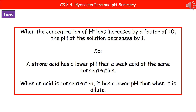If we think about concentration: when an acid is concentrated, the pH is lower than when it's dilute. So a one molar acid has a lower pH than a 0.5 molar acid. Just remember those two links between strength and pH, and concentration and pH.